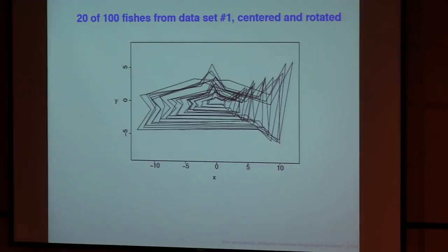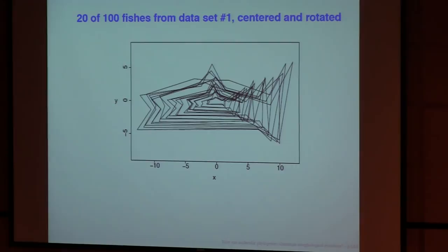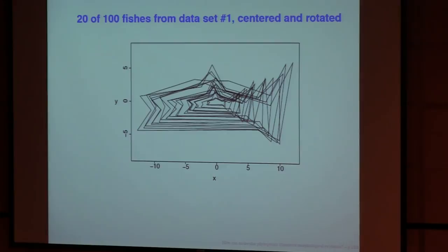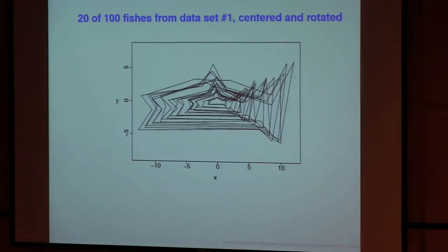The result is, here are some fish, okay. Here are some of the fish. We simulated a hundred fish up this phylogeny, and they change in size quite a lot, and their fins move around, and their noses move around. And this is just 20 of them plotted, because I couldn't plot them all because it wouldn't be easy to see.